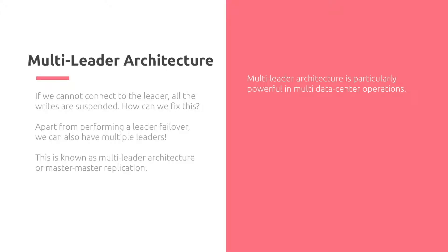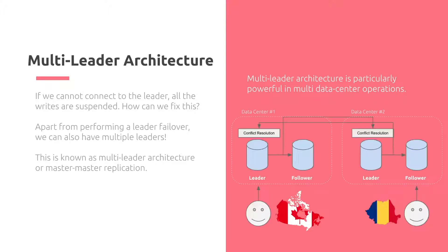Multi-leader architecture is particularly powerful in multi data center operations. For the person on the left-hand side, they're in Canada and can talk directly to a leader. The leader propagates changes to a follower within data center number one in Canada, and also sends changes over to the data center number two leader in Romania, all the way in Europe. There, some conflict resolution occurs, and then that leader propagates the changes to the follower. This means the individual in Canada does not need to wait to send data to a leader in another country, giving performance improvements and reduced latency.